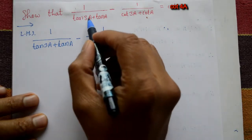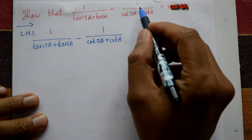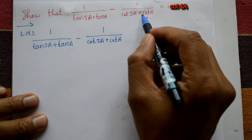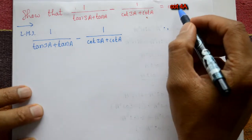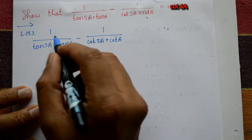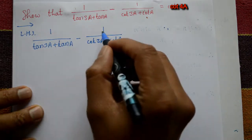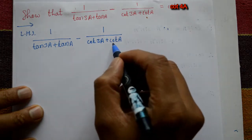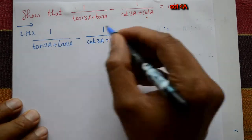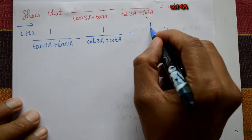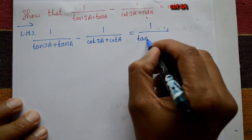Show that 1 upon tan(3a) plus tan(a) minus 1 upon cot(3a) plus cot(a) is equal to cot(4a). Taking the left hand side: 1 upon tan(3a) plus tan(a) minus 1 upon cot(3a) plus cot(a). The first term we write as it is: 1 upon tan(3a) plus tan(a).